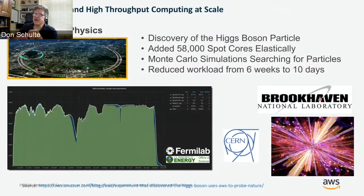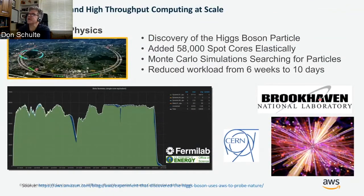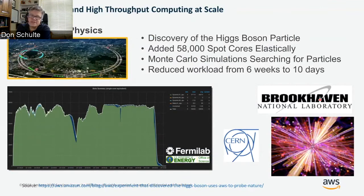Here's a usage pattern from work we did with Brookhaven with CERN and the LHC. When they were actually looking for the Higgs boson particle, they had 58,000 spot cores elastically. You can see the immediate ramp-up in that graph and the usage model through it.